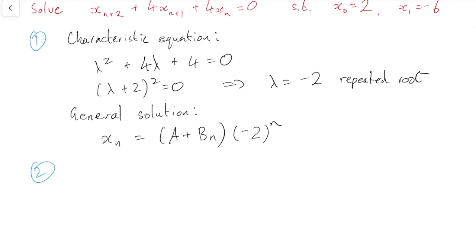Okay, so that's our general solution, but now we want to find the specific solution by using the initial conditions. So the initial condition x_0 equals 2 gives us A equals 2. So that gives us A straight away.